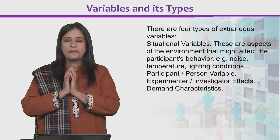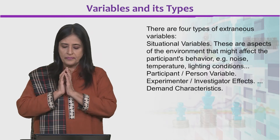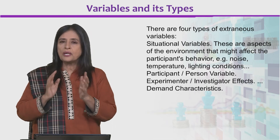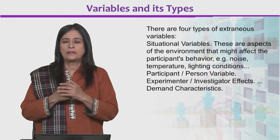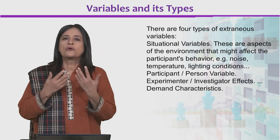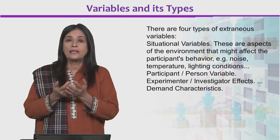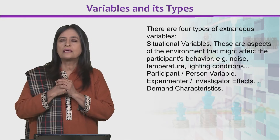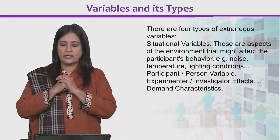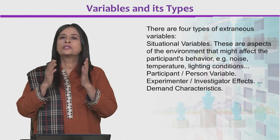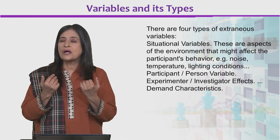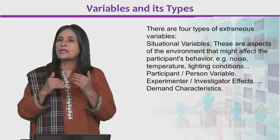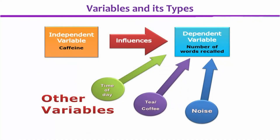There are four types of extraneous variables: situation or environment-related — like noise, heat, or very bright light; participant or person-related — where the person themselves is different in some way you don't know about that is affecting the result; experimenter or investigator-related — where the experimenter is doing something in a particular way that has an effect; and finally, during the experiment, the participant's own expectations — what we call demand characteristics — like why am I here and what do they expect from me, what am I supposed to do.